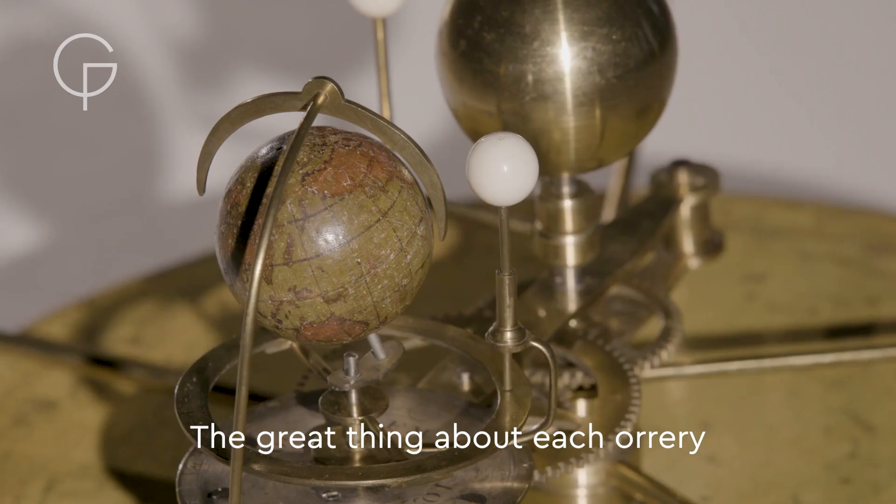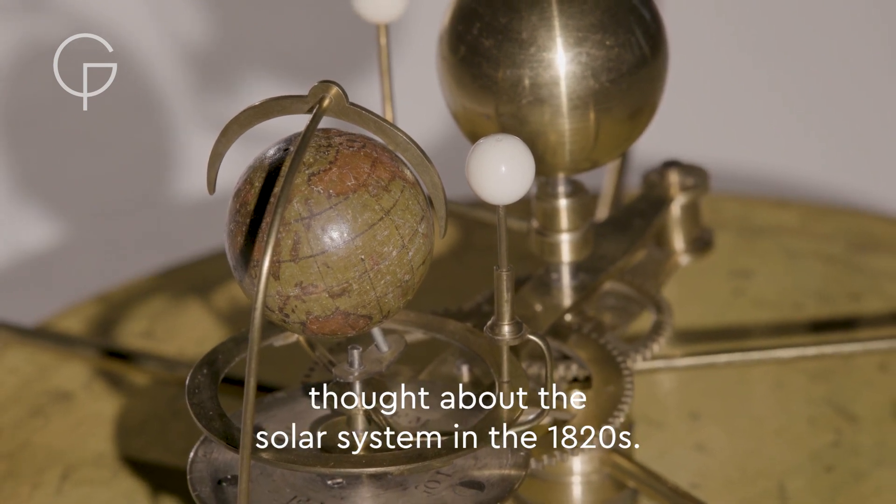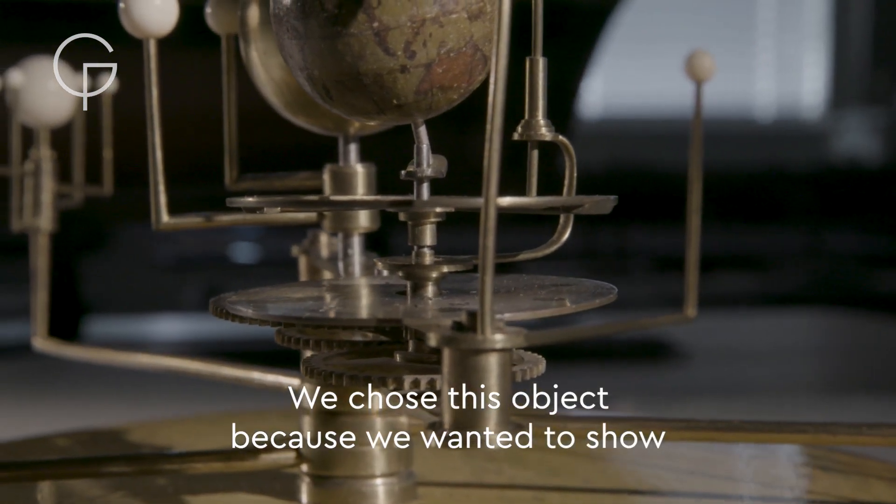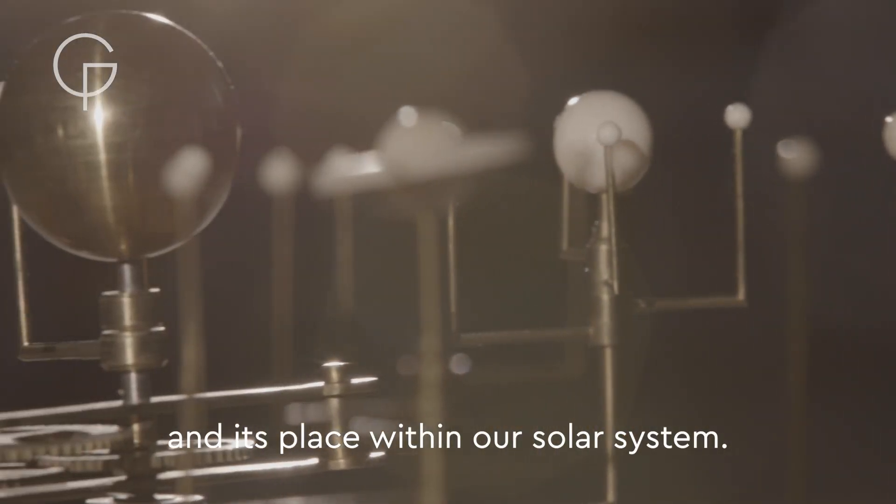The great thing about each orrery is that it gives us an idea of what astronomers thought about the solar system in the 1820s. We chose this object because we wanted to show how people have tried to visualize the motion of the moon and its place within our solar system.